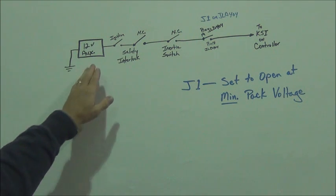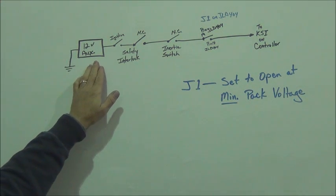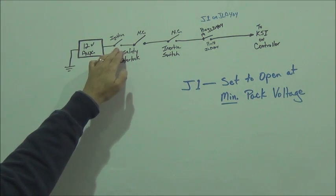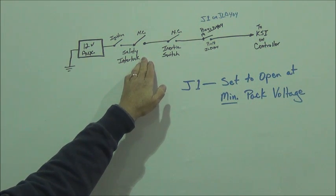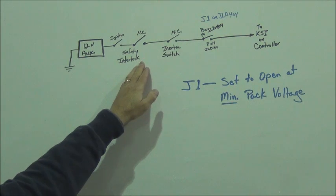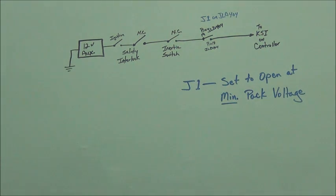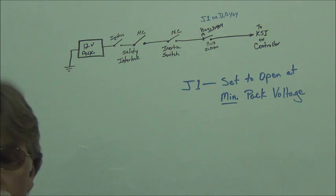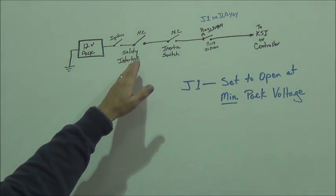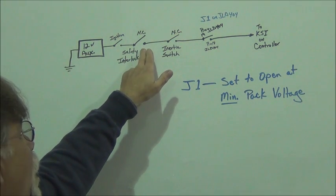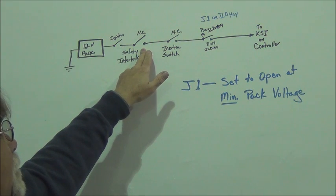So in this case, here's my 12-volt auxiliary battery. It goes through our ignition. It can go through a series of safeties. In this case, I'm showing a safety interlock, which is what we call your cutout when you plug in your charger so that the car can't be moved while it's being charged under its own power.